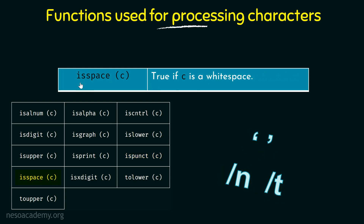Next we have ISSPACE, which returns true if C is a whitespace. It also returns true if it is a newline or a tab. Don't confuse this with the control characters — here we are checking if it is a whitespace, newline, or tab. That is what ISSPACE does.